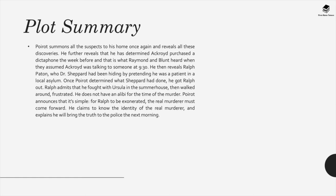He then reveals Ralph Patton, whom Dr. Shepard had been hiding by pretending he was a patient in a local asylum. Once Poirot determined what Shepard had done, he got Ralph out. Ralph admits that he fought with Ursula in the summer house, then walked around frustrated. He does not have an alibi for the time of the murder. Poirot announces that for Ralph to be exonerated, the real murderer must come forward. He claims to know the identity of the real murderer and explains he will bring the truth to the police the next morning.